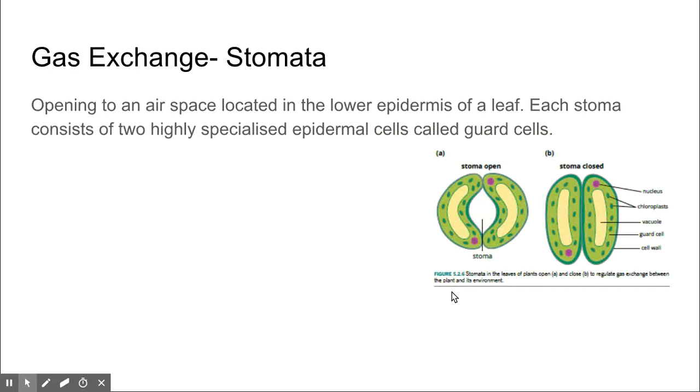Our final structure is the stomata, which are crucial in gas exchange. They allow an airspace to open, which is opened and closed by guard cells. Whether they are open or closed will depend on the amount of gas exchange and transpiration that will occur in the leaf.